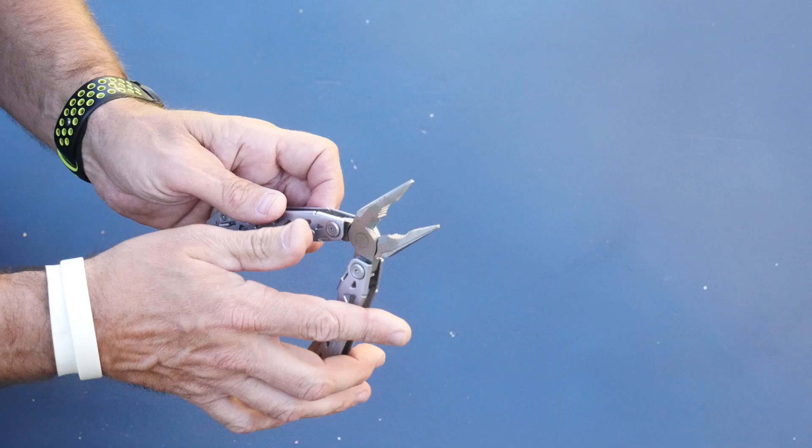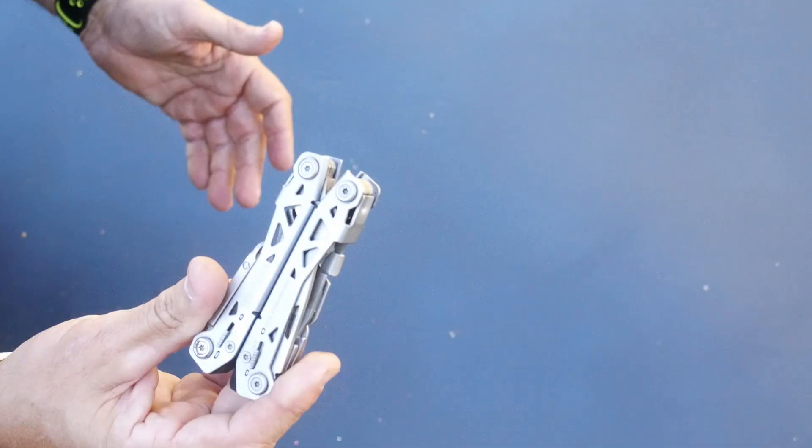All right, so there it is. Gerber Suspension NXT Multi-Tool. I keep this in my car door all the time, and when I'm at work, I always have it in my pocket. This is great for anybody that likes to get out, tinker on things, or always needs to have a pair of pliers, a knife, or something handy.